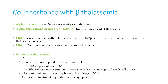Sickle beta thalassemia has autosomal recessive inheritance. The clinical features depend on the amount of hemoglobin A. HbS beta0 presents as sickle cell anemia since there is almost no hemoglobin A, and HbS beta+ presents as moderate anemia with less severe signs of sickle cell disease. Whatever the type, hemoglobin S predominates on electrophoresis at almost always more than 50%. Supportive treatment is the mainstay of therapy depending on symptoms.